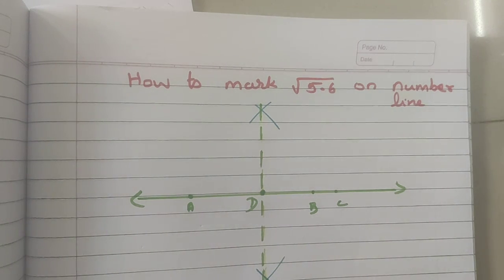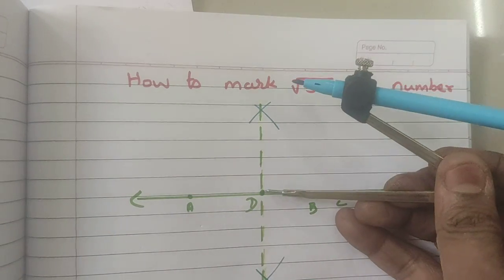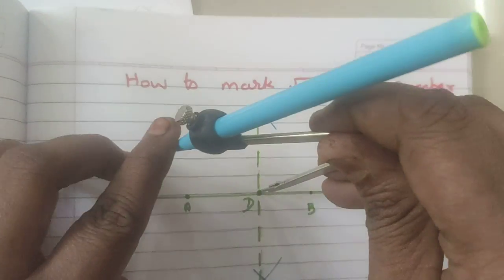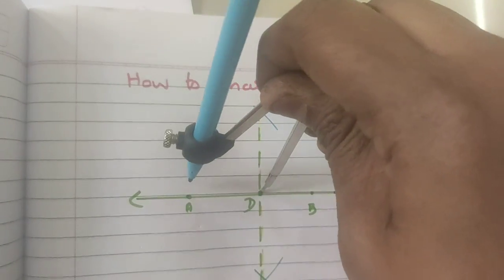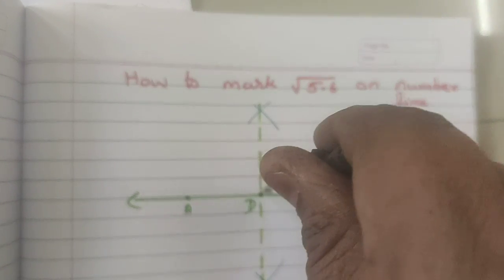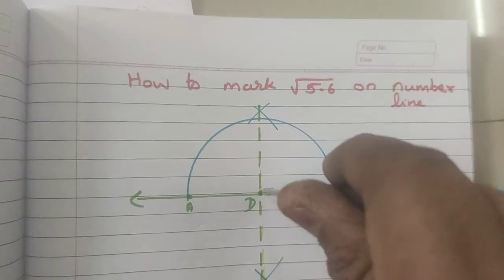Okay? Now, D as centre, D A as radius. You should mark a semicircle. Is it clear?